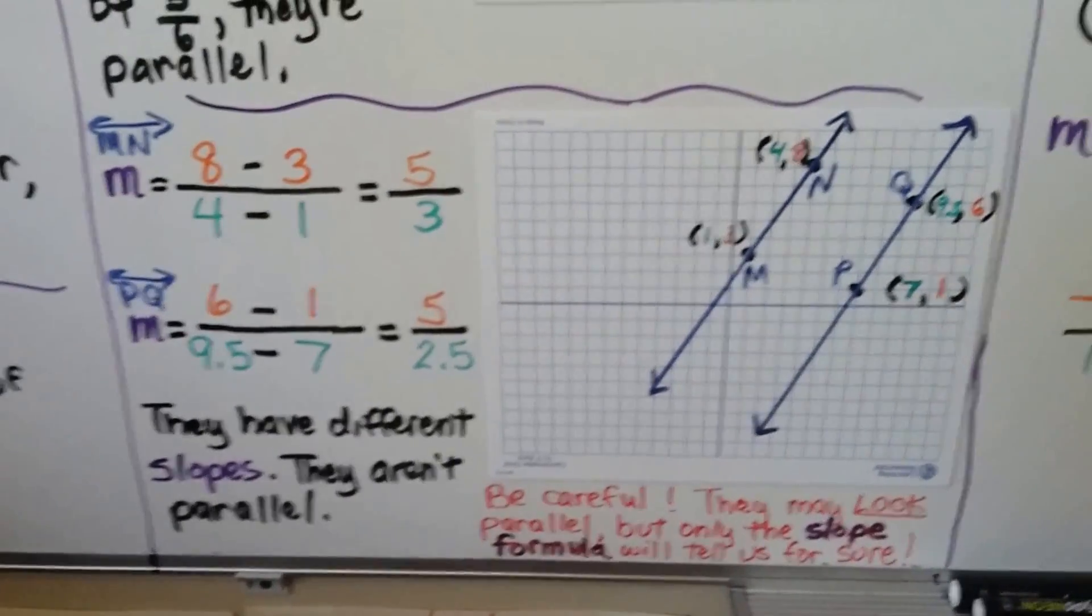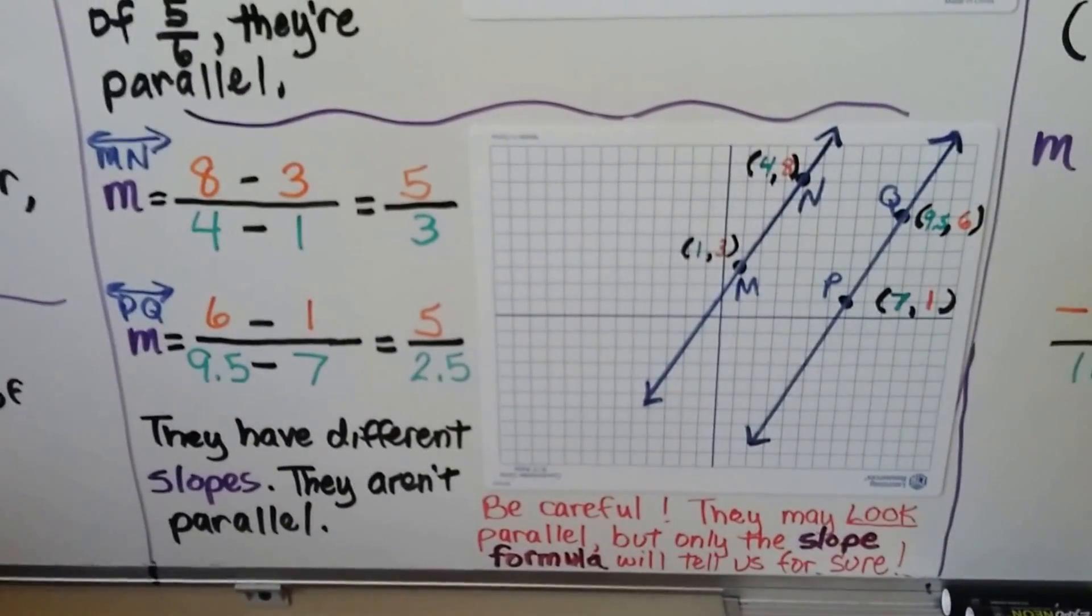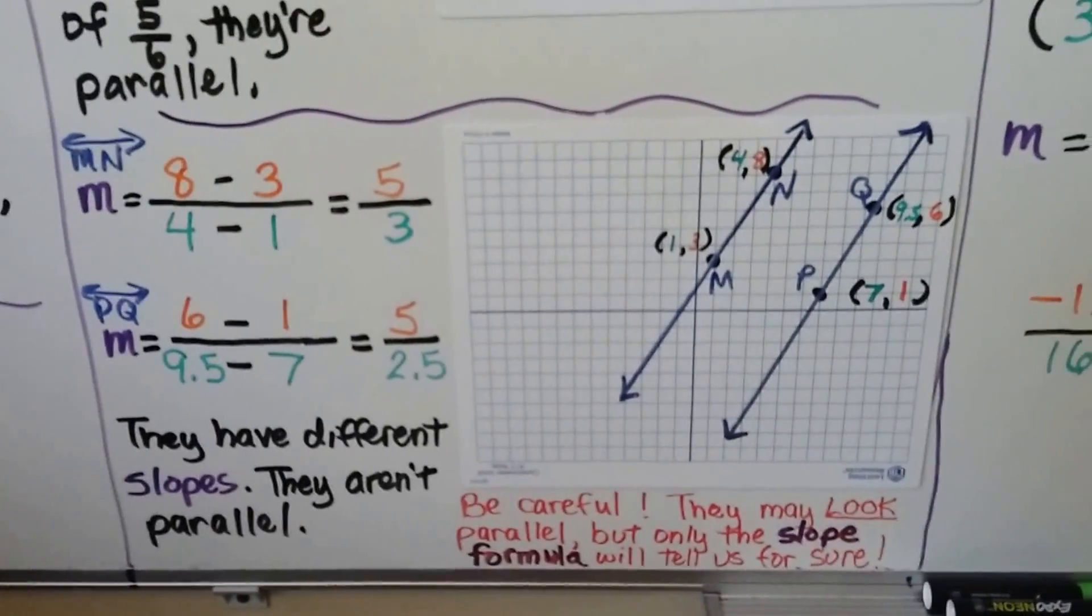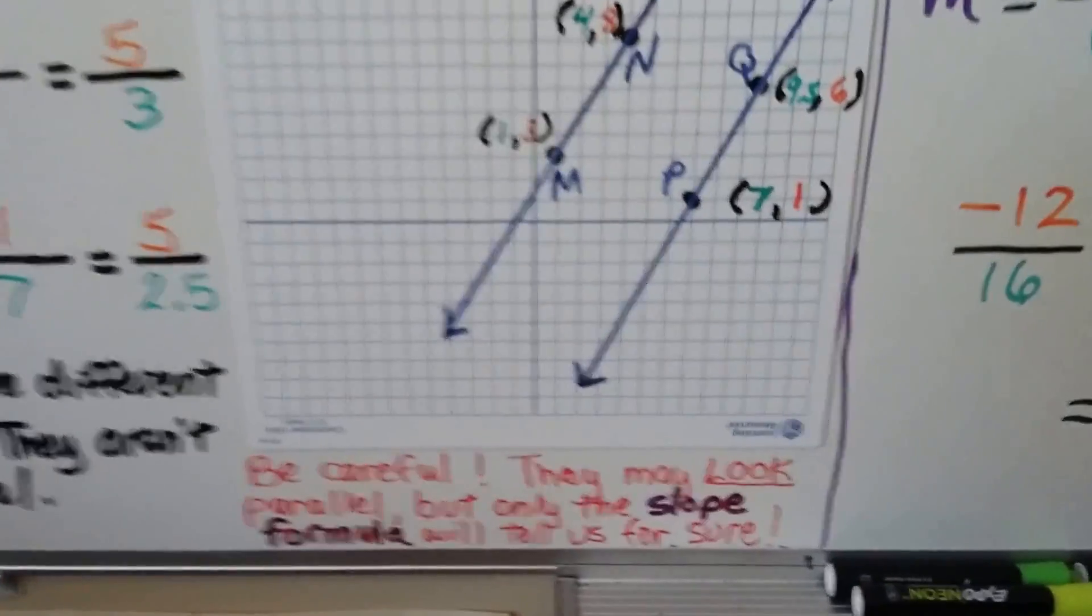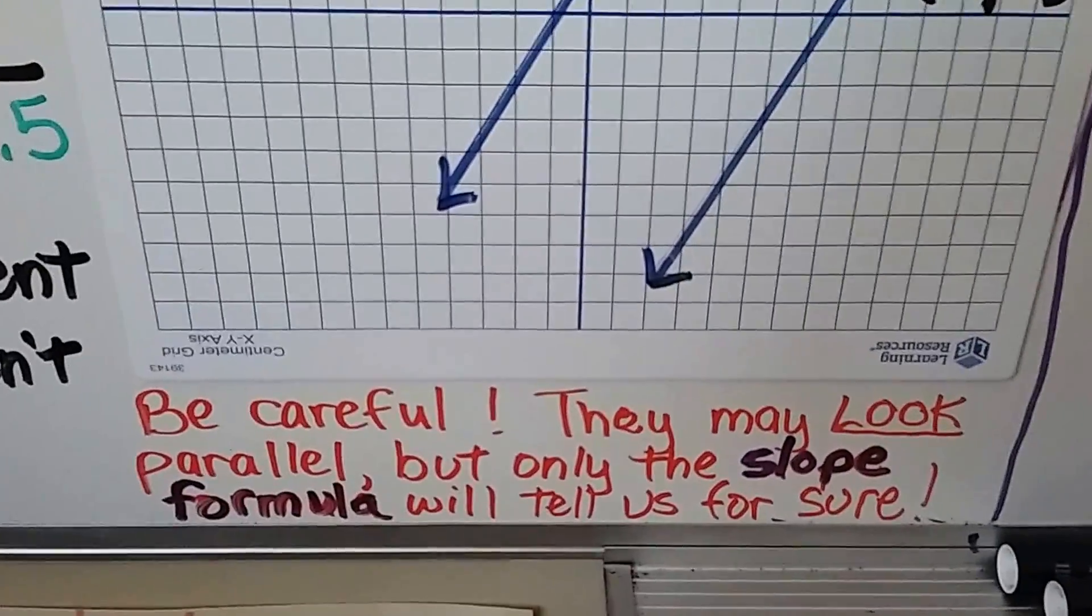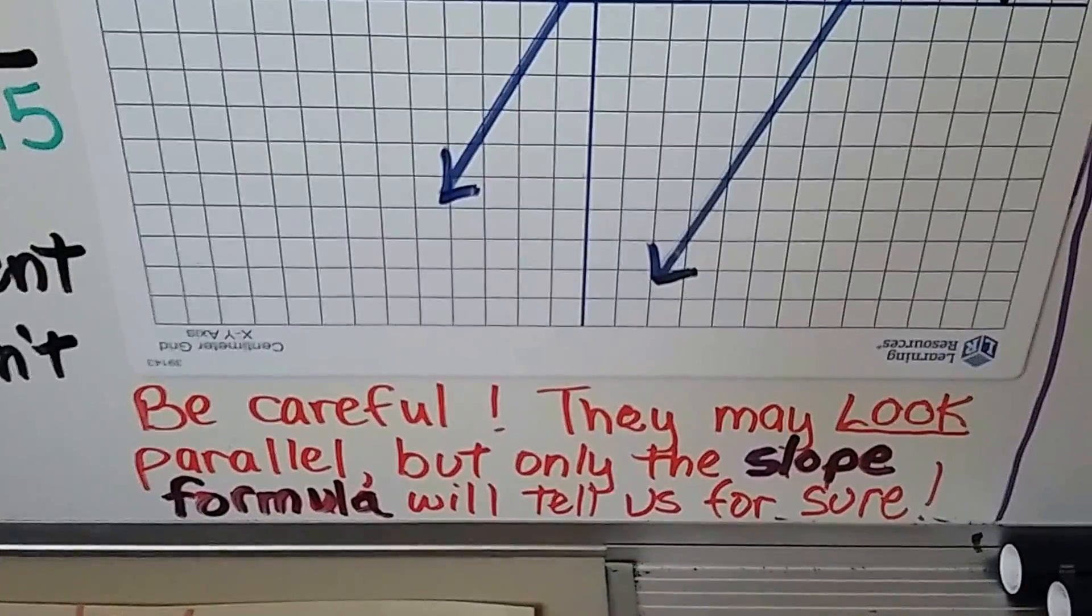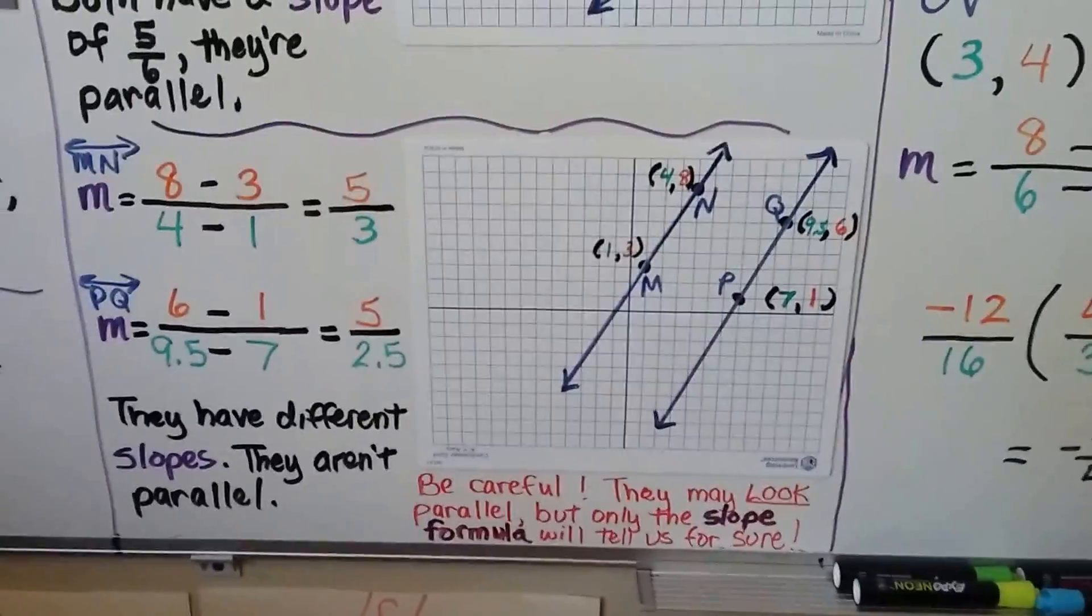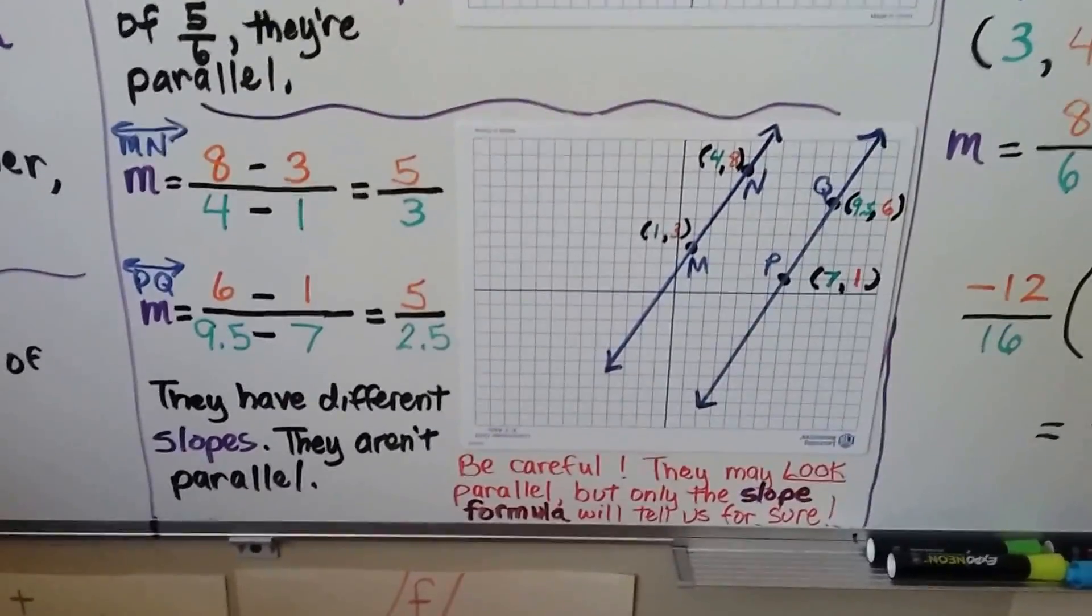Very slightly different, but they aren't parallel. They kind of look like they could be, but we have to prove it algebraically. So be careful. You may have some lines and they may look parallel, but only the slope formula will tell us for sure. Only when we solve it algebraically will we know beyond a shadow of a doubt.